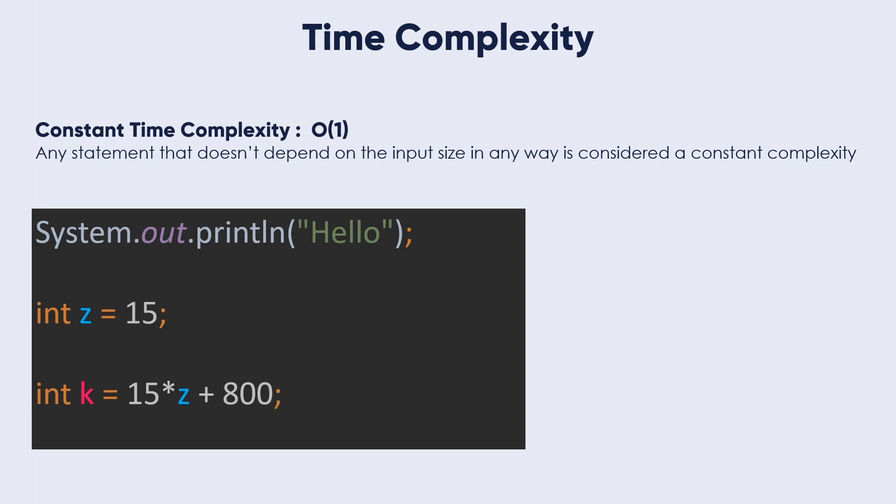We are not doing anything that depends on a statement or any input size. If we create a new K equals 15 times Z plus 800, we are just making mathematical calculations that are not depending on any input. The user will not be able to enter anything. Everything is clarified. We have Z equal to 15, so 15 times 15 plus 800. It's very simple to be calculated. This would result in a time complexity, the total time equal constant equal O of 1. This is the constant time complexity O of 1.